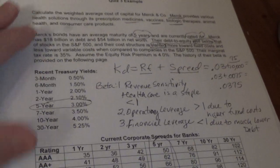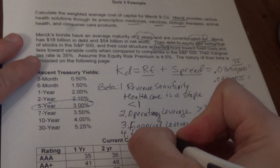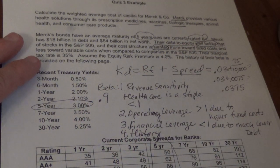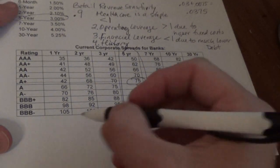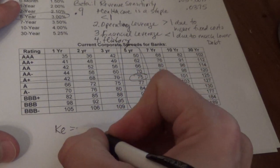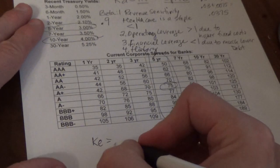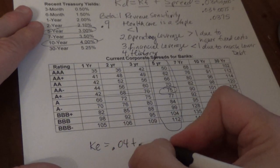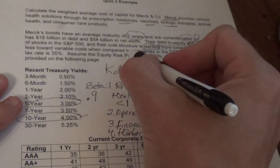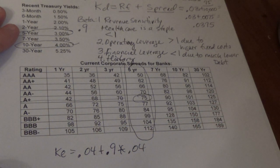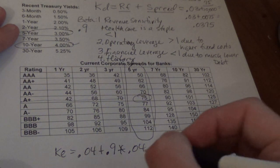I'm going to go with a beta based on history — a beta of 0.9. With a beta of 0.9, the cost of equity KE equals the risk free rate. For stocks the risk free rate is the 10 year treasury, which here is 4%. So: 0.04 plus beta of 0.9 times the market risk premium — the equity risk premium is 4%, or 0.04. When you calculate that out it gives a cost of equity of 0.076.